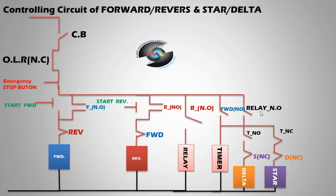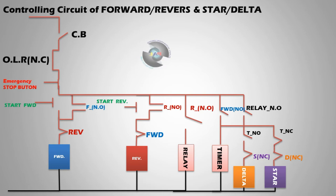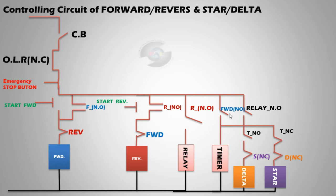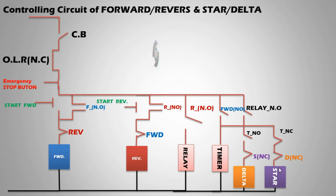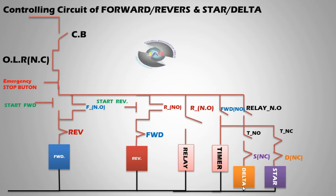When running forward with star and then delta, the whole processing works step by step. The relay is connected to the reverse NO. When reverse is ON, the relay is ON; otherwise not. When reverse is ON, the timer is connected, which is also connected to forward. When the relay connects, your star contactor turns ON immediately — the motor runs in reverse with star. After 10 or 20 seconds — depending on factory demand — the star turns OFF and delta runs.